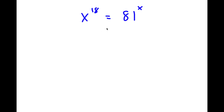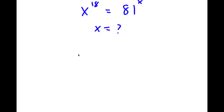Alright, so in this problem I have x to the power of 18 is equal to 81 to the power of x. I want to find the value of x here. To start, I'm going to first take the power of 1 over x on both sides.